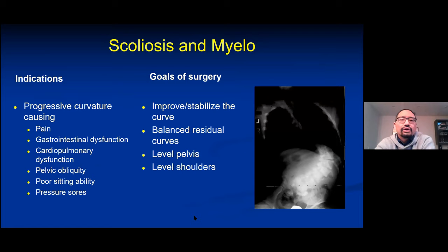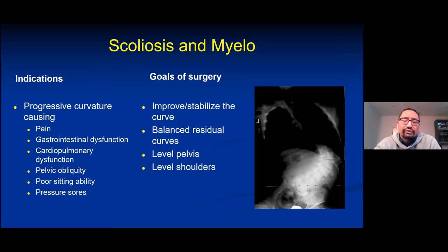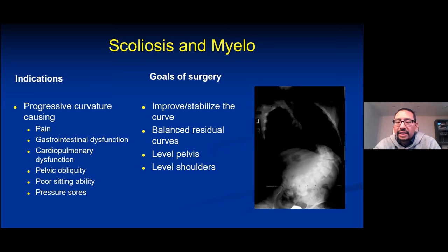For scoliosis in myelo patients, indications to intervene include progressive curvature leading to pain, sitting imbalance, gastrointestinal issues, compression of abdominal content causing poor feeding, cardiopulmonary compromise, and pelvic obliquity, which can lead to pressure sores. The goals of surgery mirror these indications: stabilize and improve the curve, correct what we can, achieve better sitting balance, and level the pelvis. Arbitrarily, 10 degrees or less pelvic obliquity is the target.